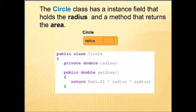For example, we have the Circle class. The Circle class has an instance field that holds the radius, and has a method that returns the area. Notice, however, that there is no variable for holding the area.